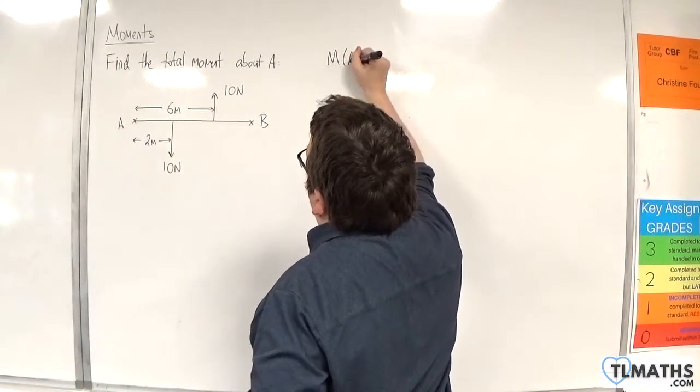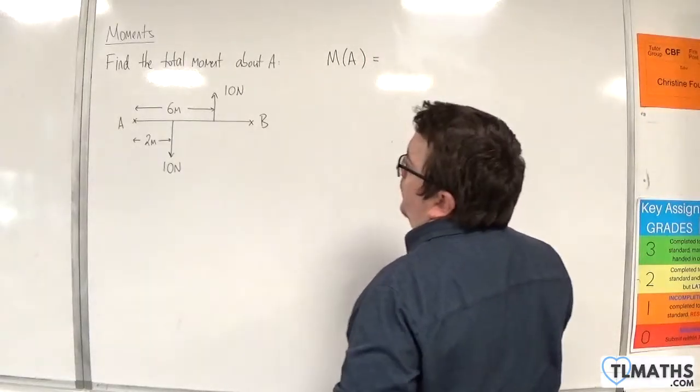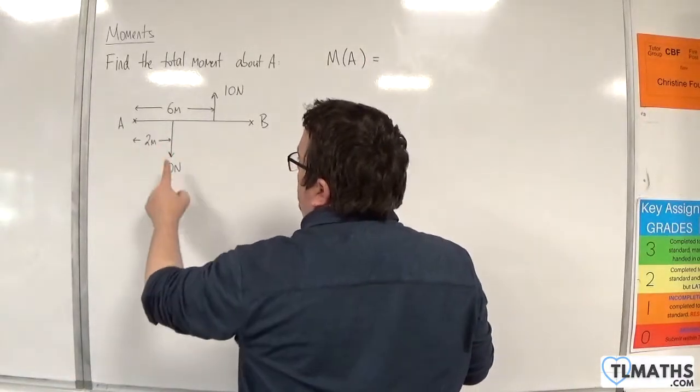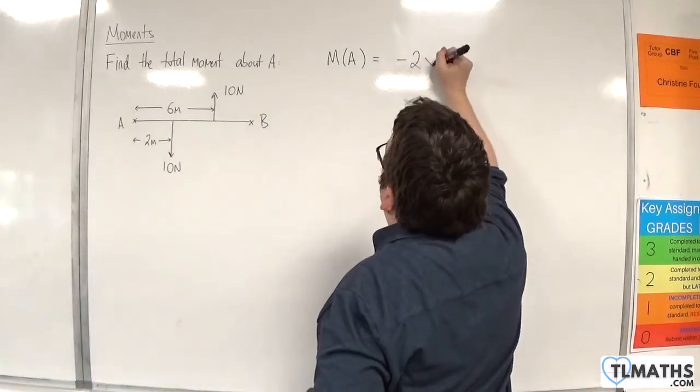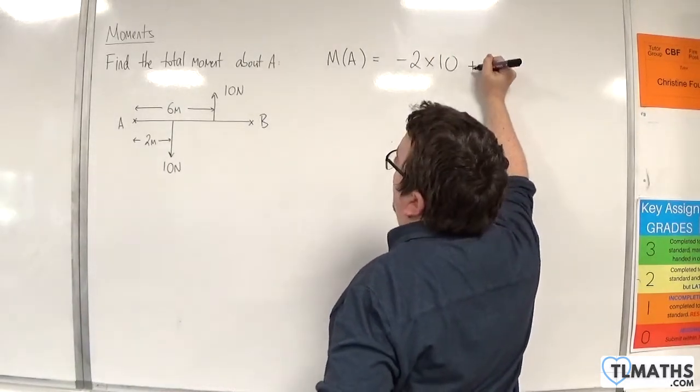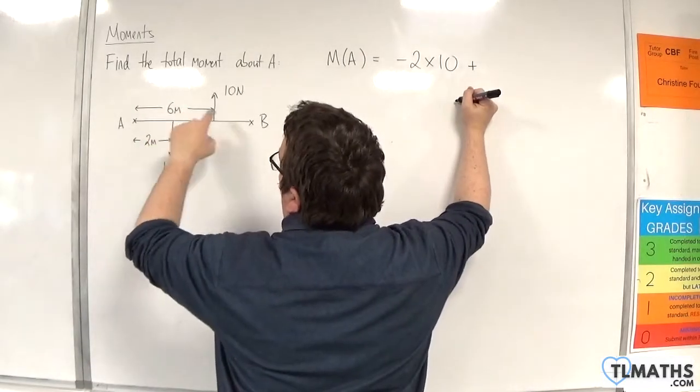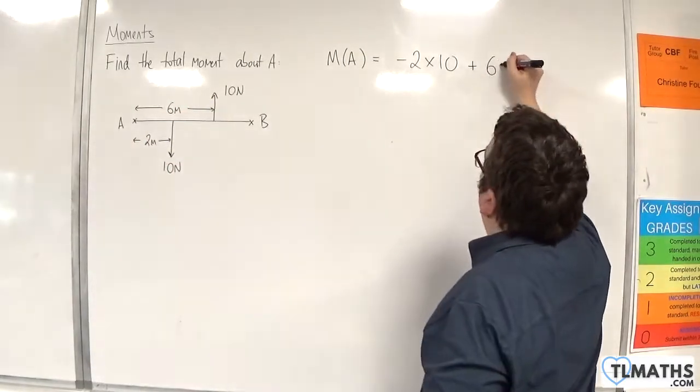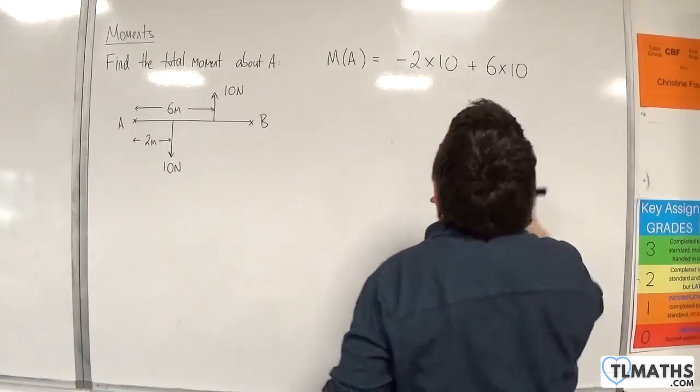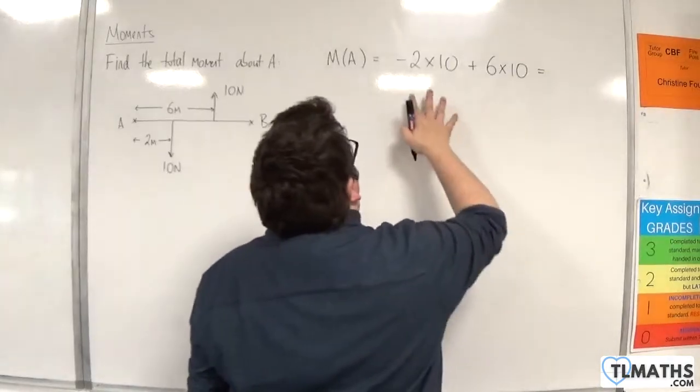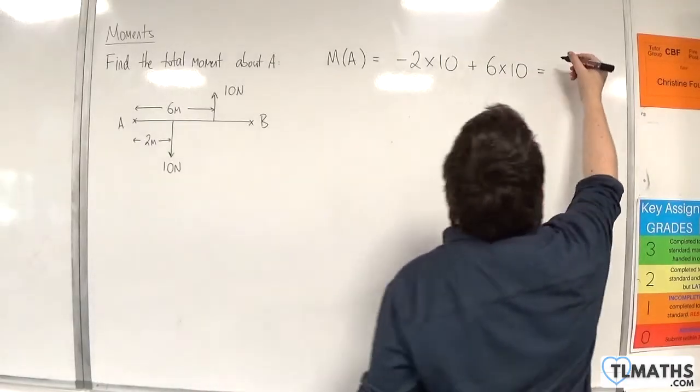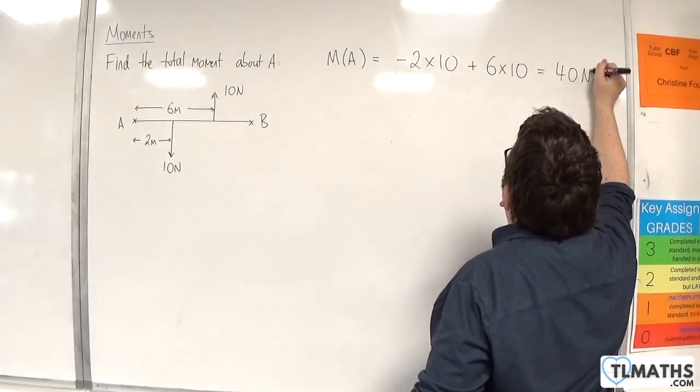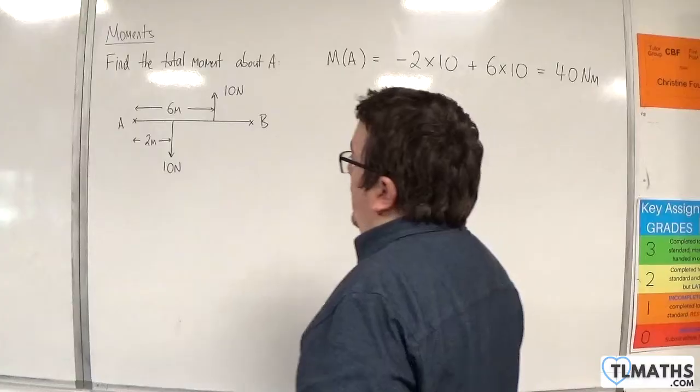So taking moments about A, we are 2 metres away from the 10-Newton force, and that's going clockwise, so take away 2 times 10, and then plus 6 times 10, because that's going anti-clockwise. So we get minus 2 times 10, minus 20, plus 60, and so that would be 40 Newton metres, and that would be anti-clockwise.